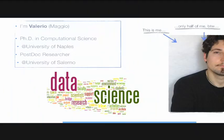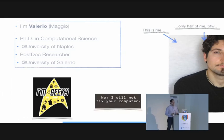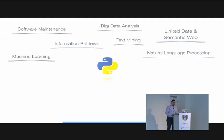Very few words about me. I got a PhD in computer science at the University of Naples last year, now I'm a postdoc researcher at the University of Salerno, so I come from Italy. I love data science and all the topics related to this kind of stuff. I usually work with information retrieval, machine learning, and recently for my postdoc with linked data and semantic web. That is the topic of the talk today, and I usually work with this kind of stuff in Python.